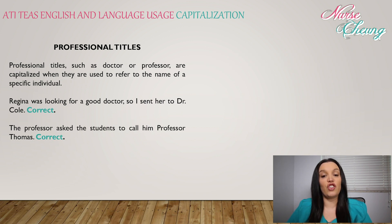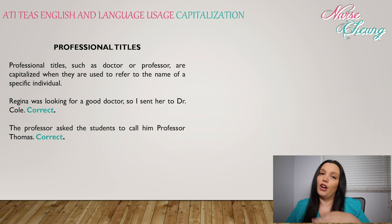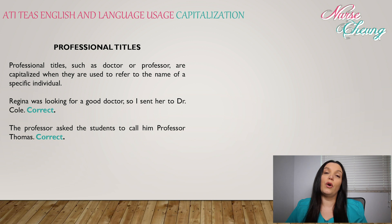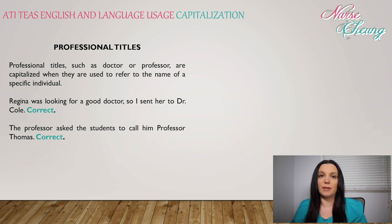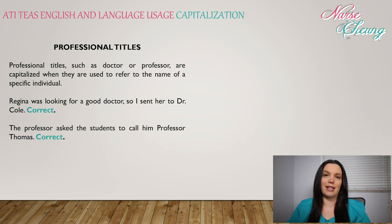Professional titles such as doctor or professor are capitalized when they are used to refer to the name of a specific individual. For example: 'Regina was looking for a good doctor, so she sent her to Dr. Cole.' As you can see, 'good doctor' is not capitalized because it's not referring to a single person, but 'Dr. Cole' is capitalized because it is referring to a specific person. 'The professor asked the students to call him Professor Thomas.' The first use of 'professor' is not capitalized because it's not referring to a specific person, whereas 'Professor Thomas' is capitalized because it is referring to that specific person.